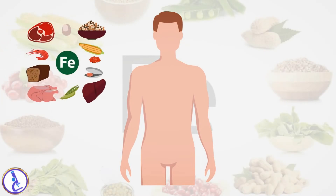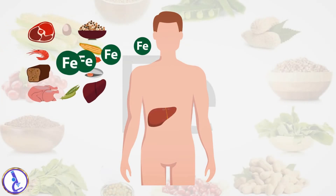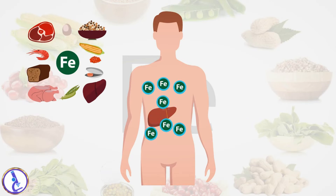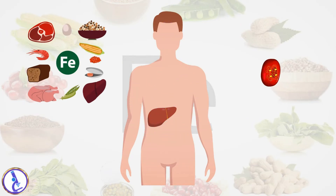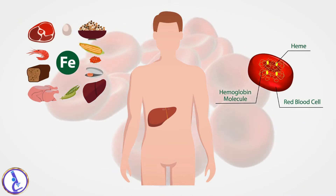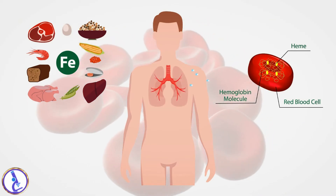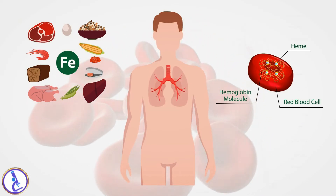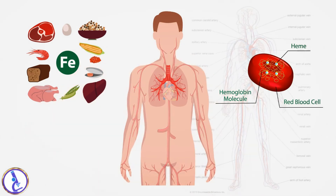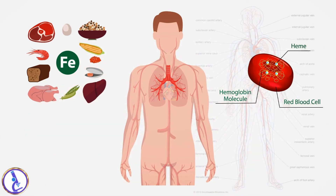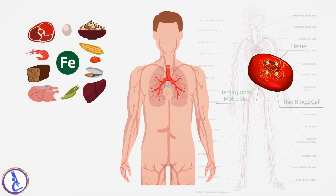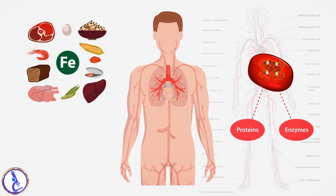Iron is an essential nutrient absorbed from the foods we eat, transported throughout the body by binding to proteins produced by the liver. It is a critical part of hemoglobin, the protein in red blood cells that binds oxygen in the lungs and releases it as blood circulates to other parts of the body. It is also used to produce some proteins and enzymes in our bodies.